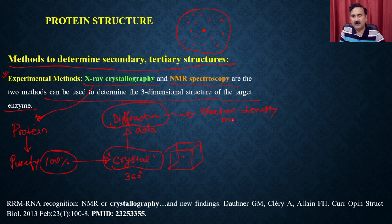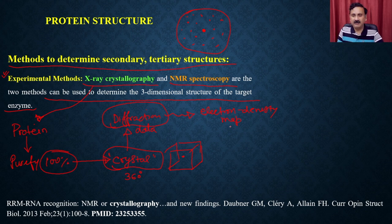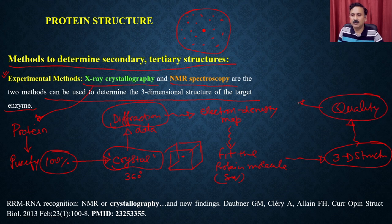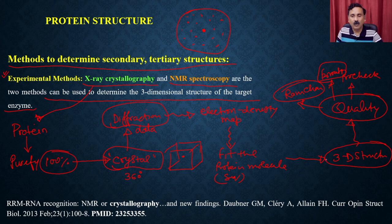Once you collect the electron density map, you fit the protein sequence into it. After fitting, it gives you the 3D structure of the protein. Once you have the 3D structure, you perform quality assessment using programs like the Ramachandran plot, ProCheck, and Arata plot. These tell you whether the 3D structure solved by fitting the protein sequence into the electron density map is correct. If you get an R factor of approximately 20, the protein structure solved by X-ray crystallography is considered very good.